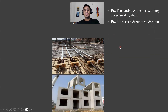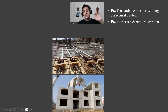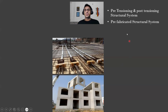Next we have pre-fabricated structural systems. In this system, structural units are prepared at a factory and then brought to the site, where they are erected. In India, pre-fabricated structural systems are found in very few places for normal housing construction.